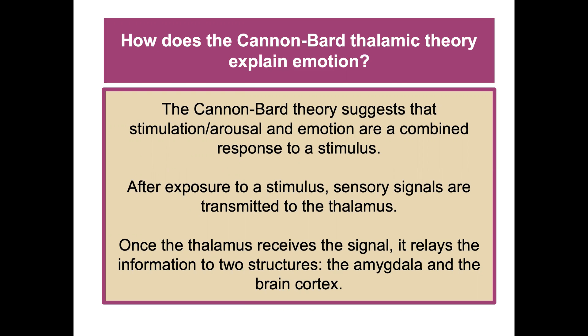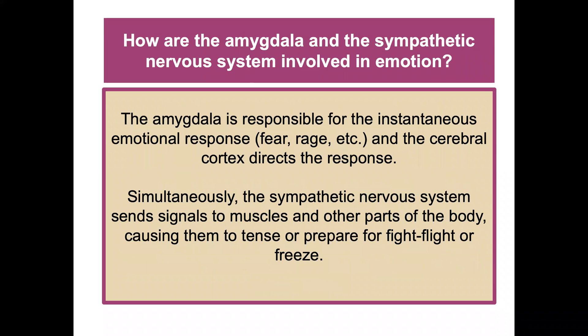In the Cannon-Bard theory, after exposure to a stimulus, sensory signals are transmitted to the thalamus — the brain's sensory control center. The thalamus then relays information to two structures: the amygdala, responsible for the instantaneous emotional response like fear and rage, and the cerebral cortex. Simultaneously, the sympathetic nervous system sends signals to the muscles and body, causing them to prepare for fight, flight, or freeze.